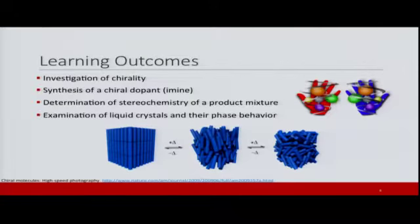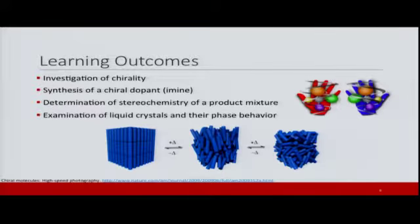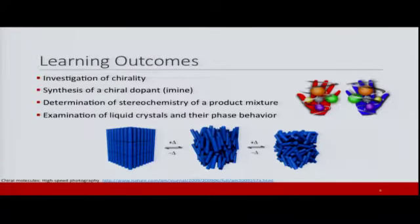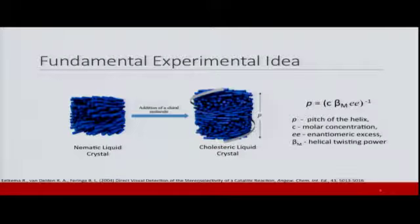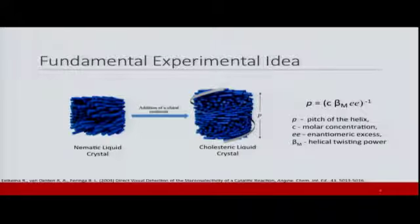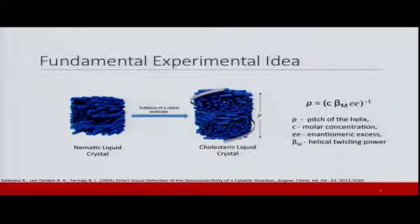The learning outcomes for this lab involve students learning about various subtle abstract molecular concepts about chirality, using liquid crystals as a tool to investigate what chirality is. Our design was based on the principle of color generation in doped nematic liquid crystals. When we add a chiral dopant to a nematic liquid crystal, it induces a chiral twist, resulting in a cholesteric liquid crystal that reflects light at a particular wavelength.